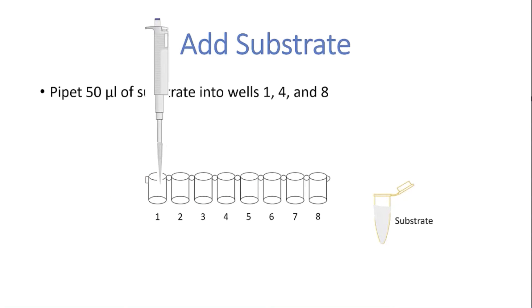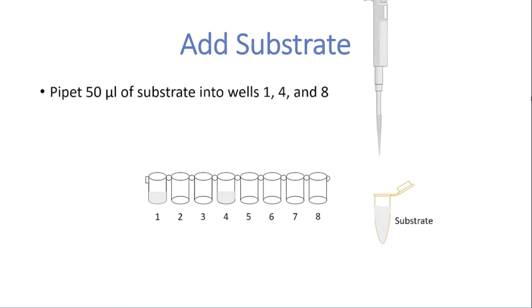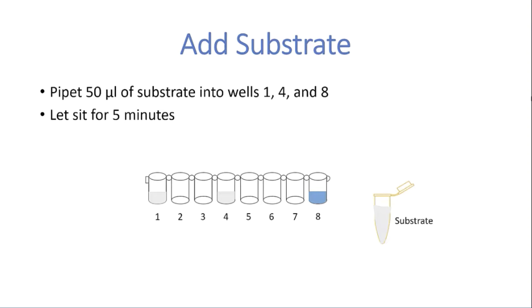Now the substrate is added. 50 µL of substrate is pipetted into wells number 1, 4, and 8 and allowed to sit for 5 minutes. The negative control should remain colorless while the positive control should turn blue. If the sample in well number 4 remains colorless, the sample is negative. If it turns blue, it is considered positive.